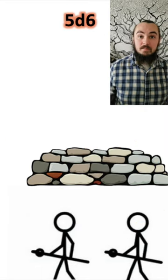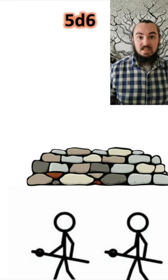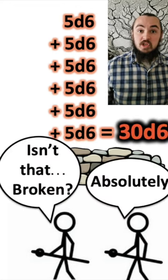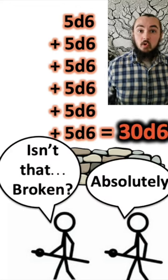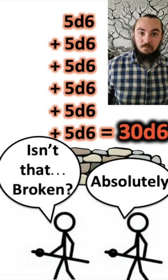A 5th level Scorching Ray attack that misses will deal 5d6 of this Force Damage. A 5th level Scorching Ray has 6 attacks, which totals 30d6 Force Damage in this 30-foot radius around the snail.